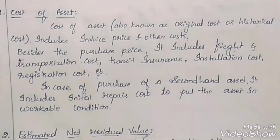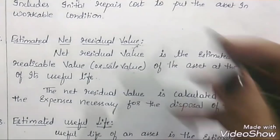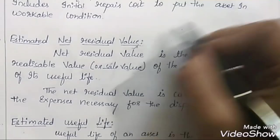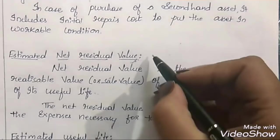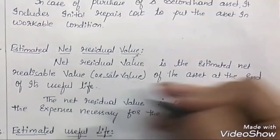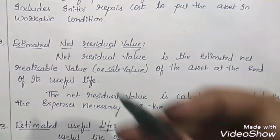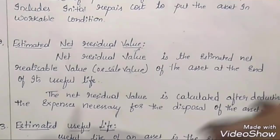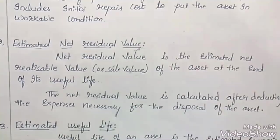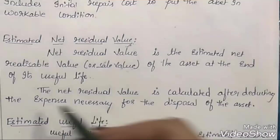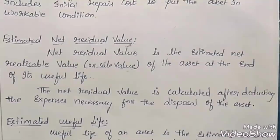The next factor is estimated net residual value, also called scrap value or salvage value. Net residual value is the sale value of the asset at the end of its useful life — when the asset cannot be used for manufacturing. This net residual value is calculated after deducting any expenses necessary for disposal of the asset.